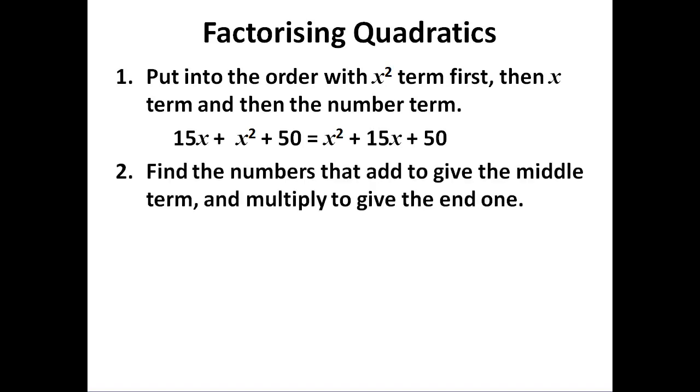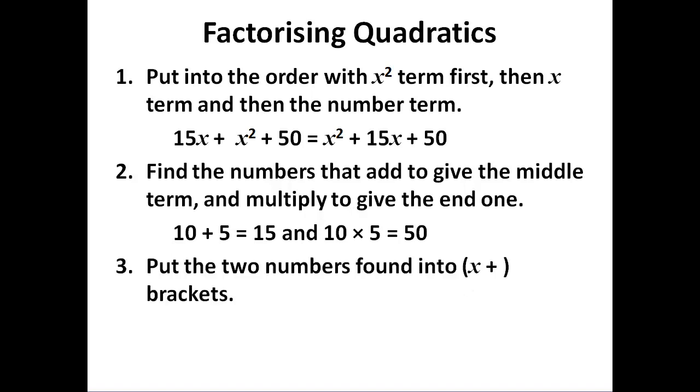Then we find the numbers that add to give the middle term and multiply to give the end one. In this case we are looking for 15 which is 10 plus 5, 50 which is 10 times 5. So those are the numbers we want, 10 and 5, and we put those into x plus brackets. We have factorised our quadratic.